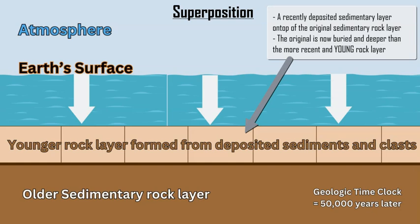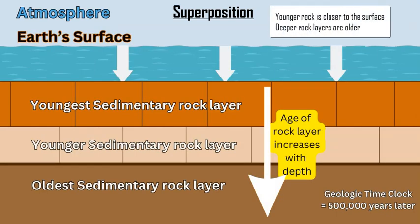We can now look at a sequence of rock layers going from the surface down and increasing with depth. Jumping forward to 500,000 years later, we have three layers: the original sedimentary rock at the bottom, a middle rock laid down on top of it, and a third layer at the surface deposited most recently. Steno's principle of superposition states that the rock layer closest to the surface is the youngest, and as you go deeper the relative age increases.